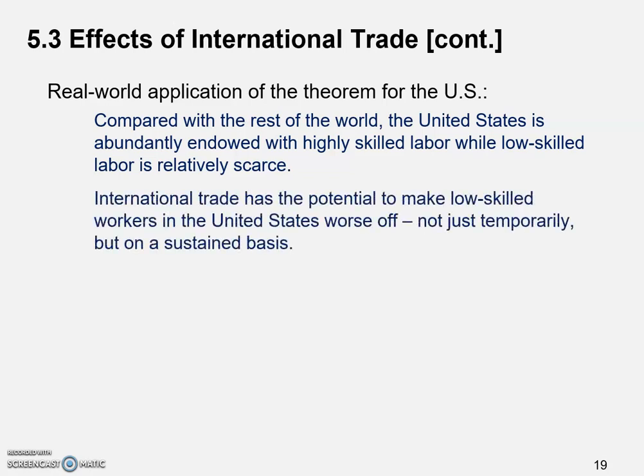This means international trade has the potential to make low-skilled workers in the United States worse off - not just temporarily, but on a sustained basis. Because of the Stolper-Samuelson theorem, the relatively scarce factor loses from trade. We're talking about blue-collar workers, especially those who used to work in manufacturing factories - those in the Rust Belt.